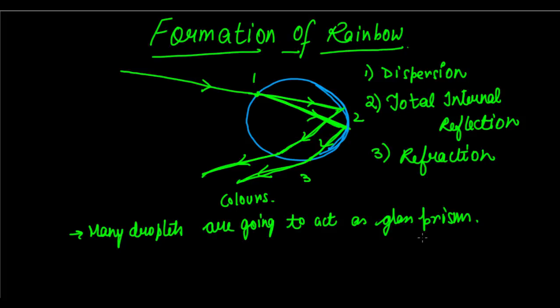And together, many such spectrums are going to come together. And they form the big rainbow that we see opposite to the sun. So that is how rainbow formation takes place.